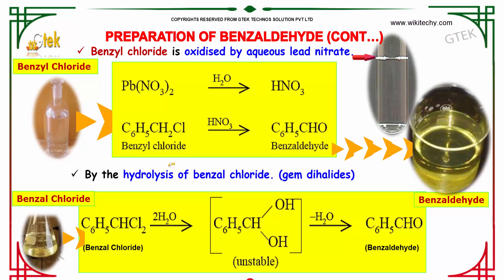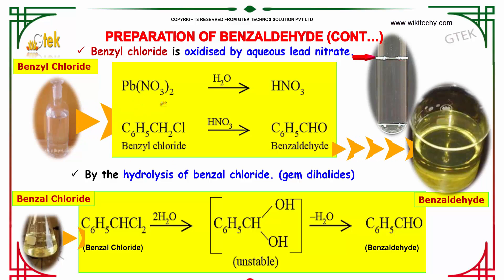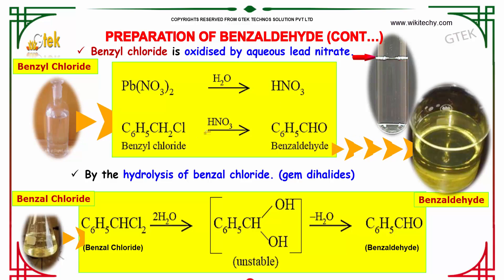Benzyl chloride is oxidized by aqueous lead nitrate. When lead nitrate Pb(NO3)2 is hydrolyzed we obtain nitric acid. When benzal chloride is made to react with nitric acid we obtain benzaldehyde.